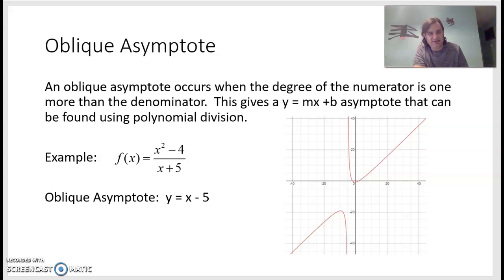So I've got an example down here. It's f(x) equals, the numerator is x squared minus 4, so degree of the top is 2. The denominator is x plus 5. We don't see a degree there, so it's understood to be 1. The degree of the numerator is one more than the denominator.